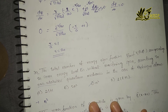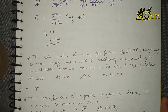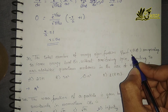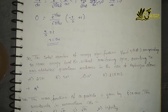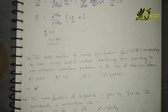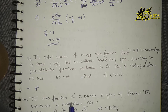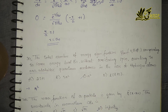Next, let's go for question number 39. The total number of energy eigenfunctions ψ_nlm(r, θ, φ) corresponding to the same energy level En, without considering spin, according to non-relativistic quantum mechanics in the case of the hydrogen atom — the key word is non-relativistic. In the non-relativistic case, the total number of energy levels will be n².